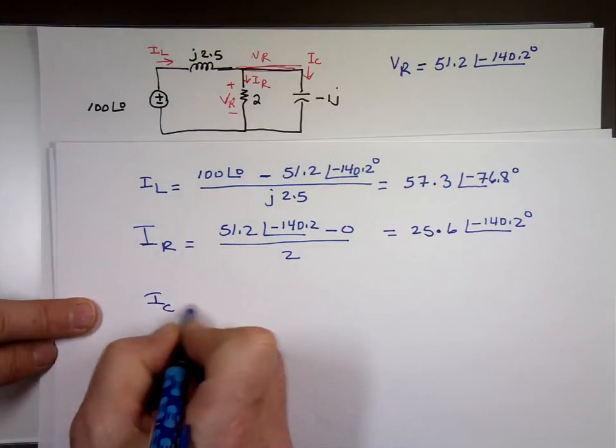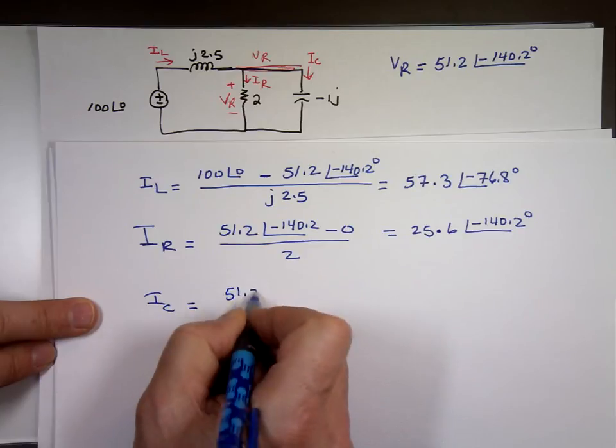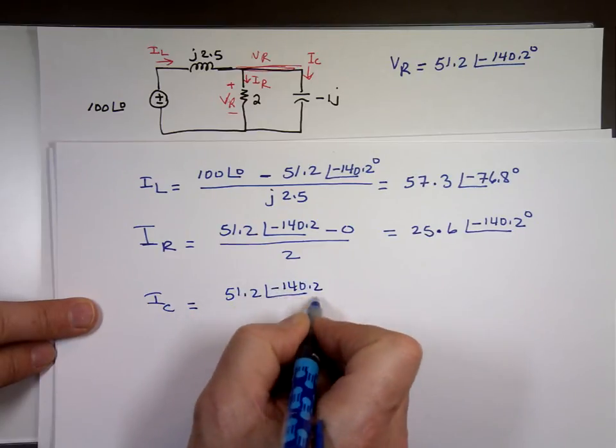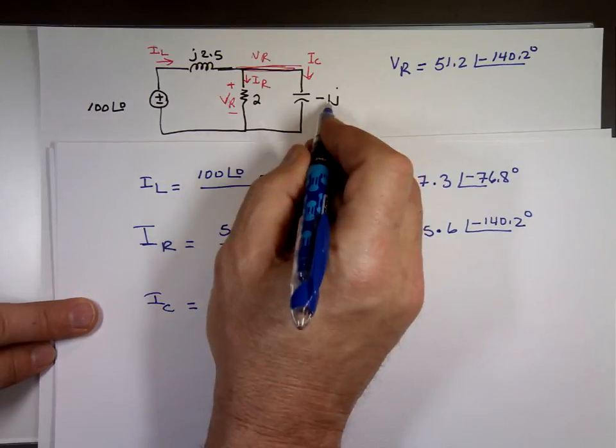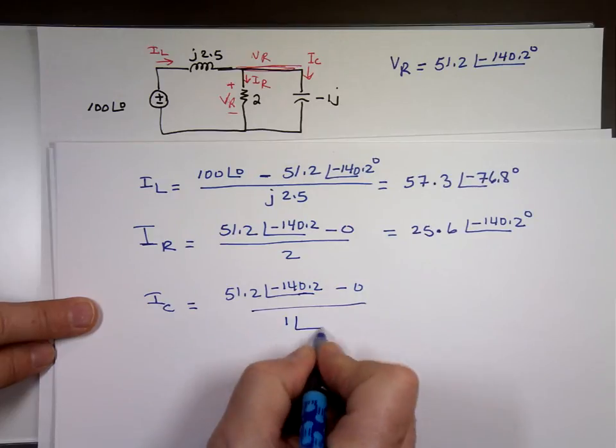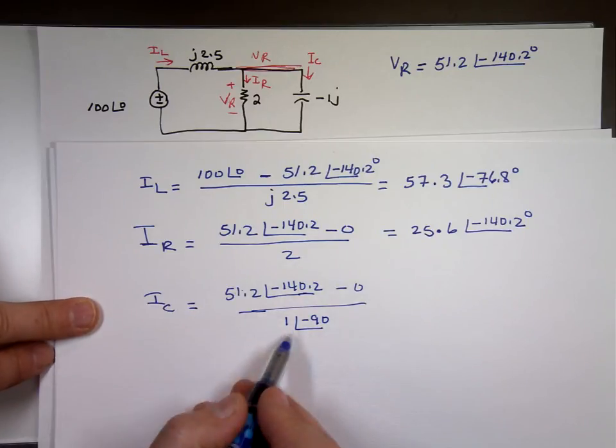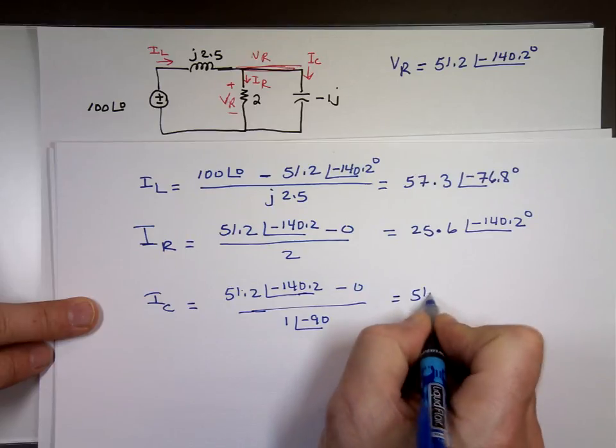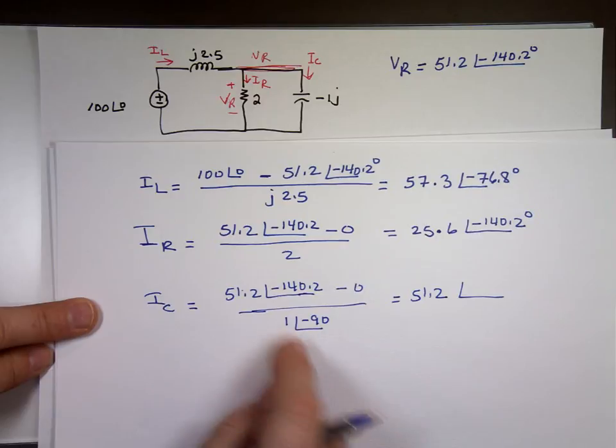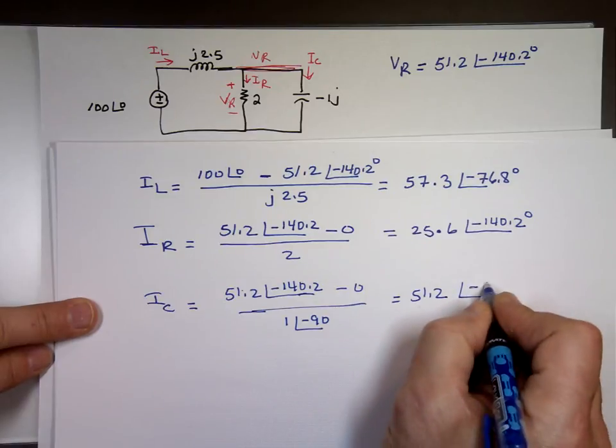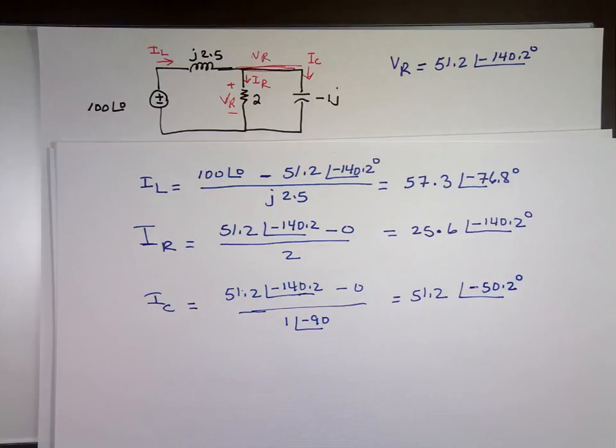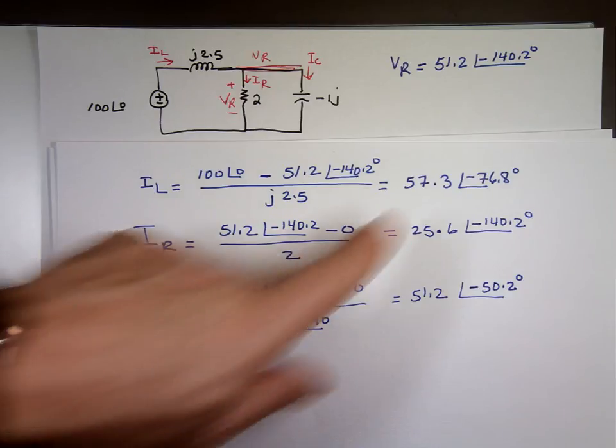I sub C. It's VR, 51.2 negative 140.2 minus the 0, divided by what? This is negative 1j or one angle negative 90. Again I don't need a calculator for that. When you divide in polar it's the magnitude over the magnitude 51.2 and you subtract the angles negative 140 minus a minus 90, that's plus 90 and make it negative 50.2.